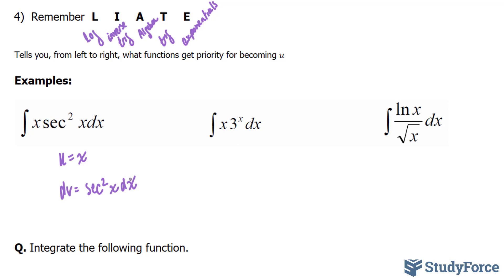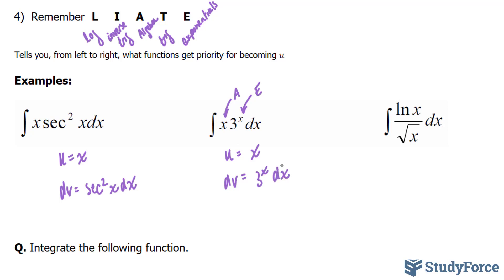Now let's try the next one. Here we have algebra, and here we have exponentials. So once again, your u will be assigned to x and your dv will be assigned to 3 to the power of x dx.